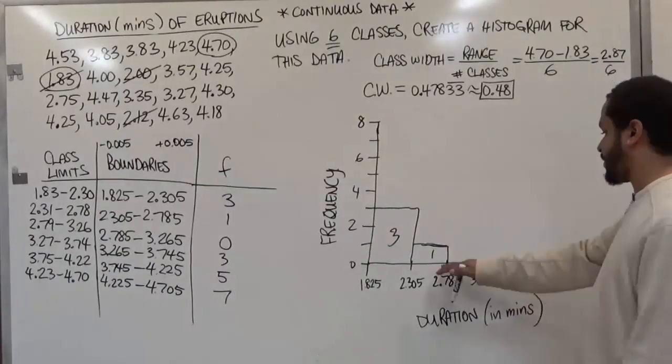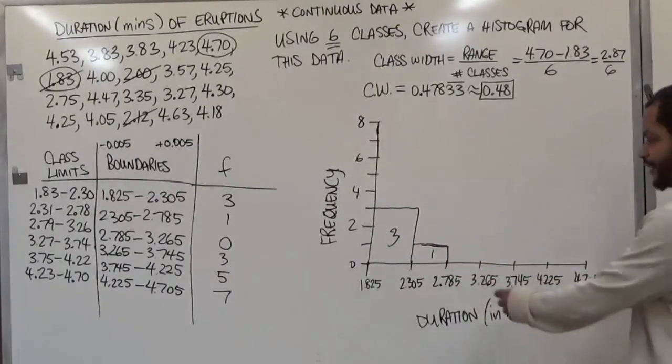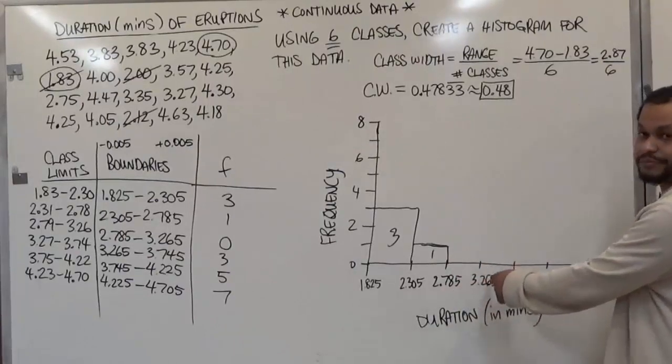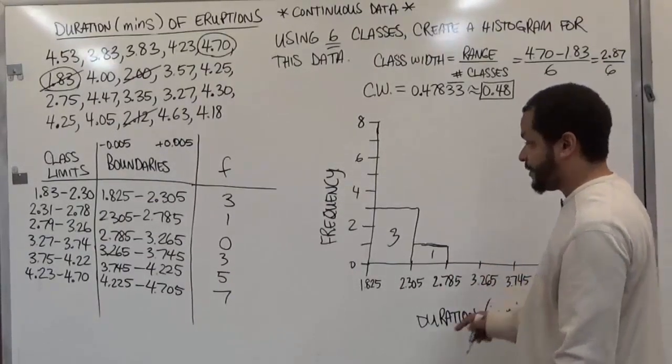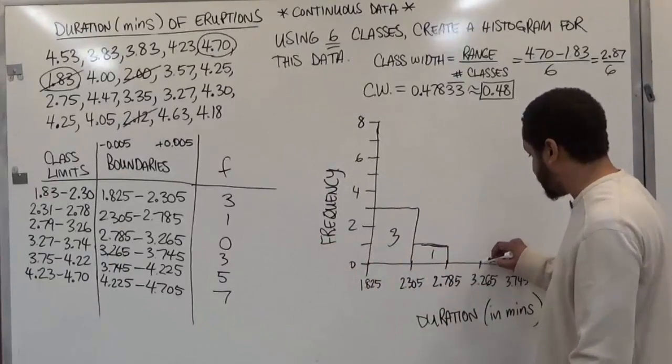The following one is 0. So we're not going to put anything for this interval that we have from 2.785 to 3.265. Just leave that one blank. The following one has a frequency of 3.